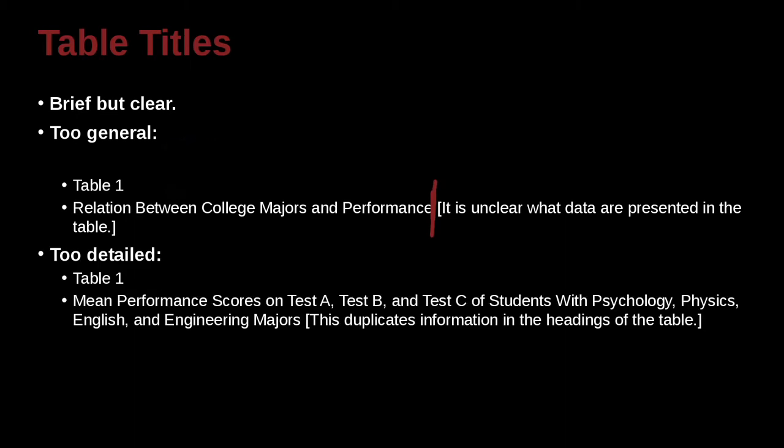Here's one that's a little bit too detailed. Mean performance scores on test A, test B, test C of students with psychology, physics, English, engineering majors. It's a lot of majors. That's what they're doing. And just read it over to here. That's a note after that. So one is too short, and one is too long.